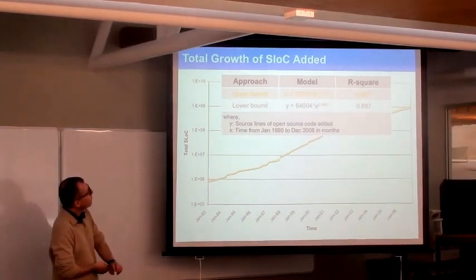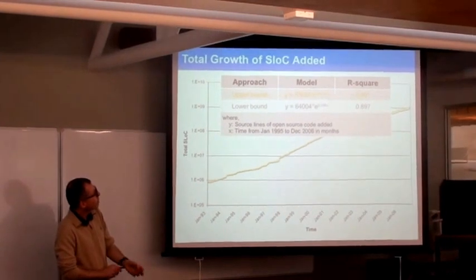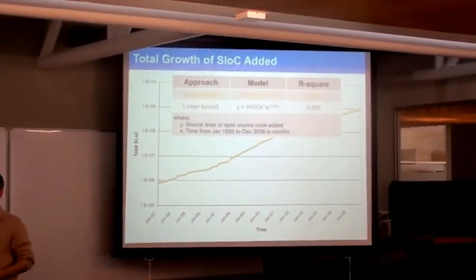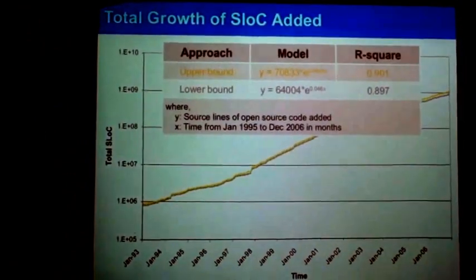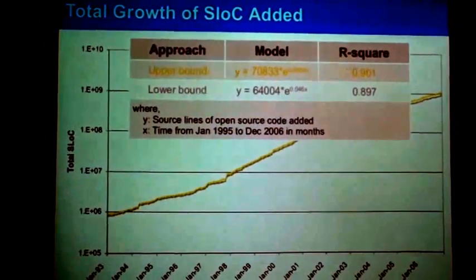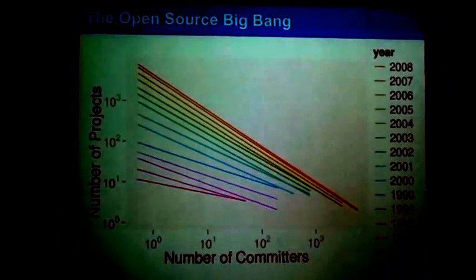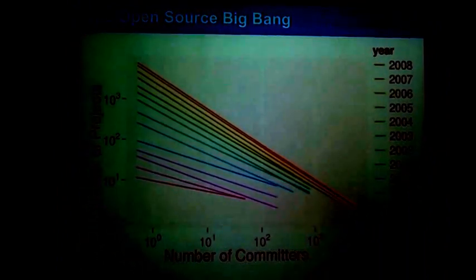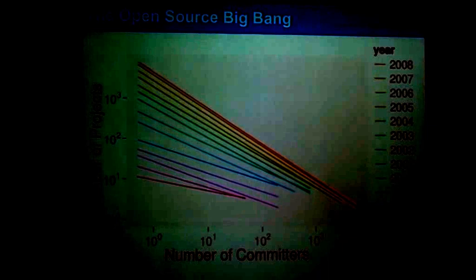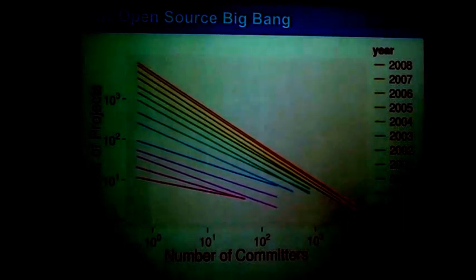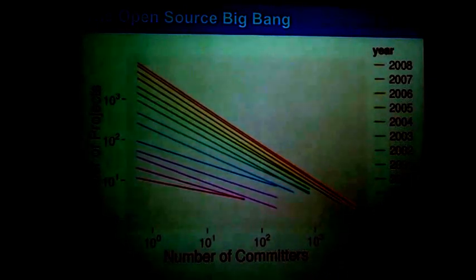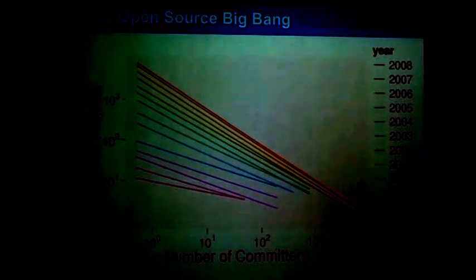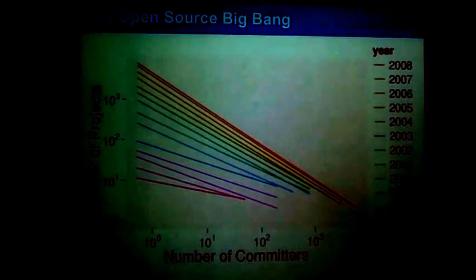We looked at the total growth, and the first derivative — the code added over time — since it's an exponential, it's also exponential, no surprise. So why do we care about open-source? Let me motivate, before I get to more detailed results, why it's so thrilling and interesting to look at open-source projects. You might say there's no money in it — I'll show you differently tomorrow.